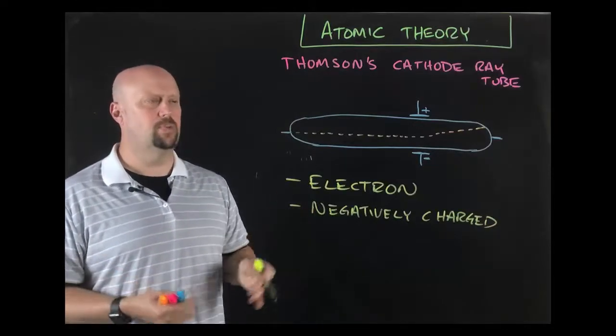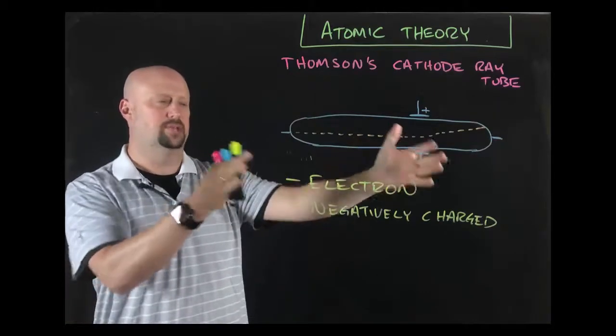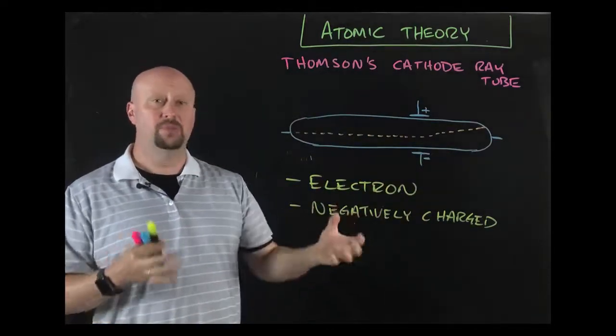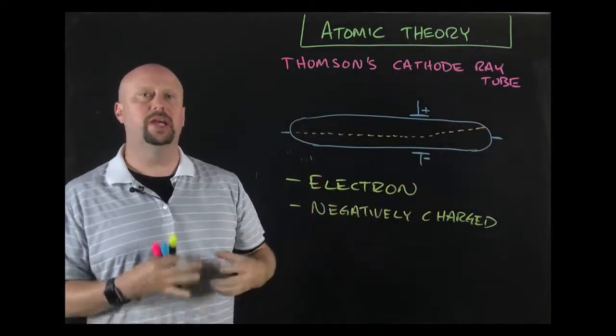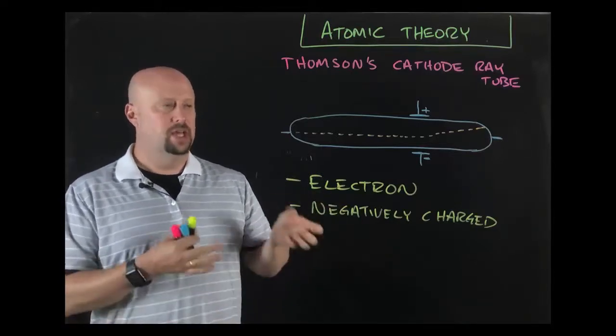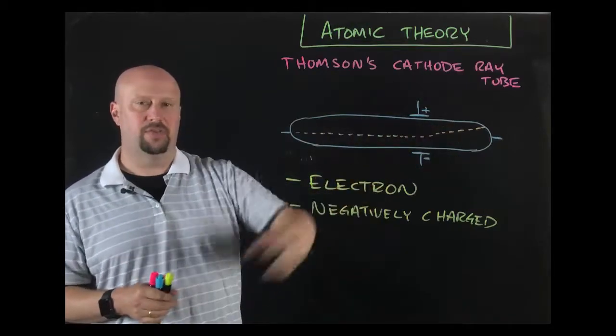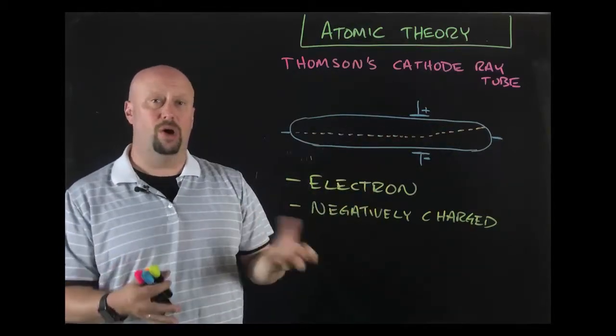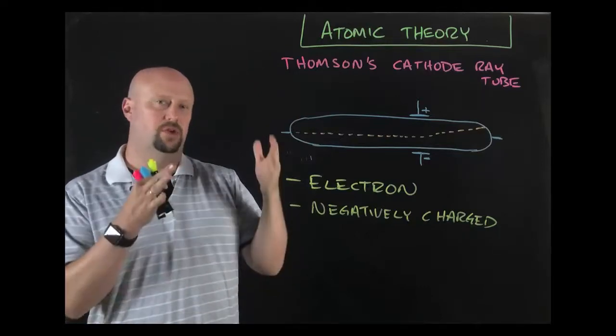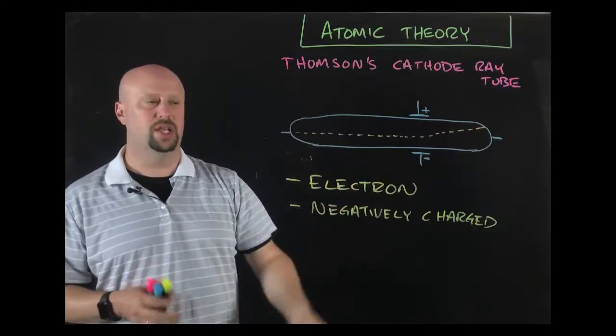Thompson notices this deflection and does a bunch of experiments. What he discovers is a charge to mass ratio. Essentially what this boils down to is Thompson discovers the existence of something called the electron. Why is this so important? This experiment is the first time they had real proof that atoms were not indivisible, that you could break them down into something smaller than an atom.